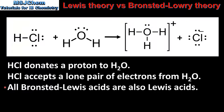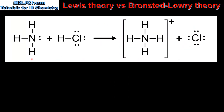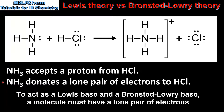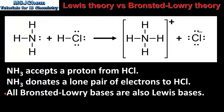Therefore all Bronsted-Lowry acids are also Lewis acids. In our next example we have the reaction between NH3 and HCl to produce the ammonium ion and the chloride ion. In terms of the Bronsted-Lowry theory, NH3 accepts a proton from HCl. In terms of the Lewis theory, NH3 donates a lone pair of electrons to HCl. So NH3 is acting as both a Bronsted-Lowry base and a Lewis base. Therefore all Bronsted-Lowry bases are also Lewis bases.